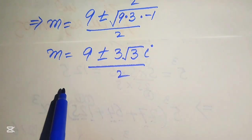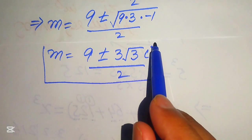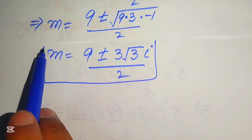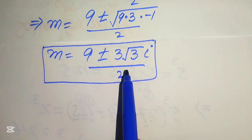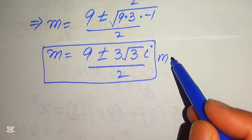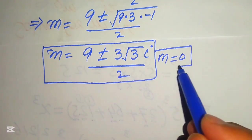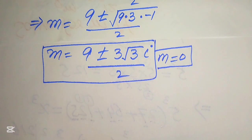Finally, we have all 6 roots of the given equation. From Equation 1: m = 6 (real) and two complex roots [3 ± 3√3 i] / 2. From Equation 2: m = 0 (real) and two complex roots [9 ± 3√3 i] / 2. This is the final answer. Thank you so much for watching this video — please subscribe to my channel for more exciting videos.